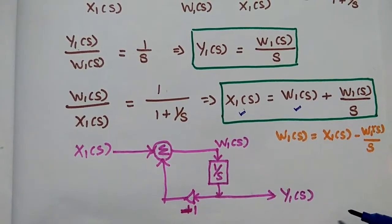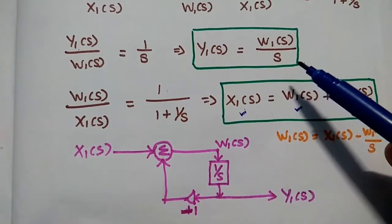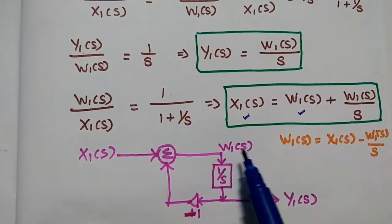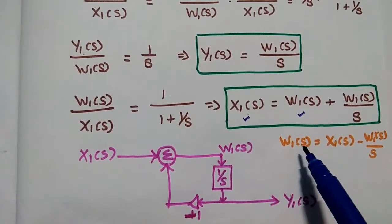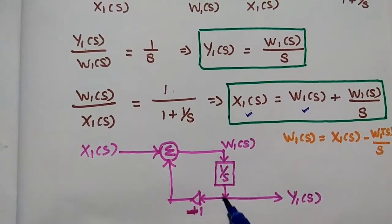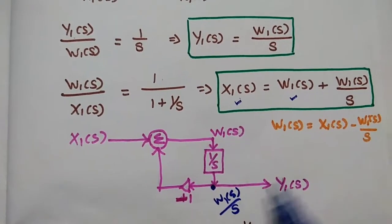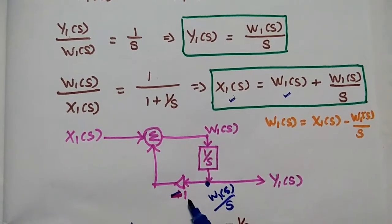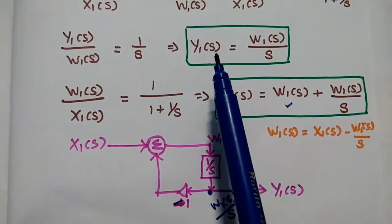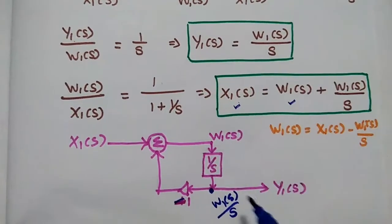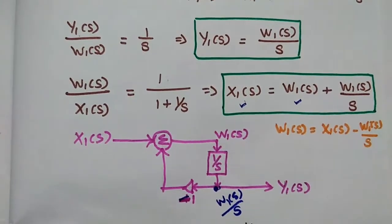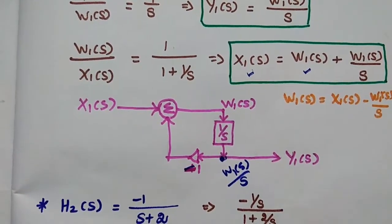Now we draw the direct form 2 structure for these two equations. X1(s) is the input signal and W1(s) is the intermediate output. We obtain W1(s) by adding two values: W1(s) is fed into a 1/s block to get W1(s)/s, which is multiplied by minus 1 and fed back. The actual output Y1(s) equals W1(s) by s, taken directly from the output of the 1/s block. This completes the direct form 2 for the first transfer function.